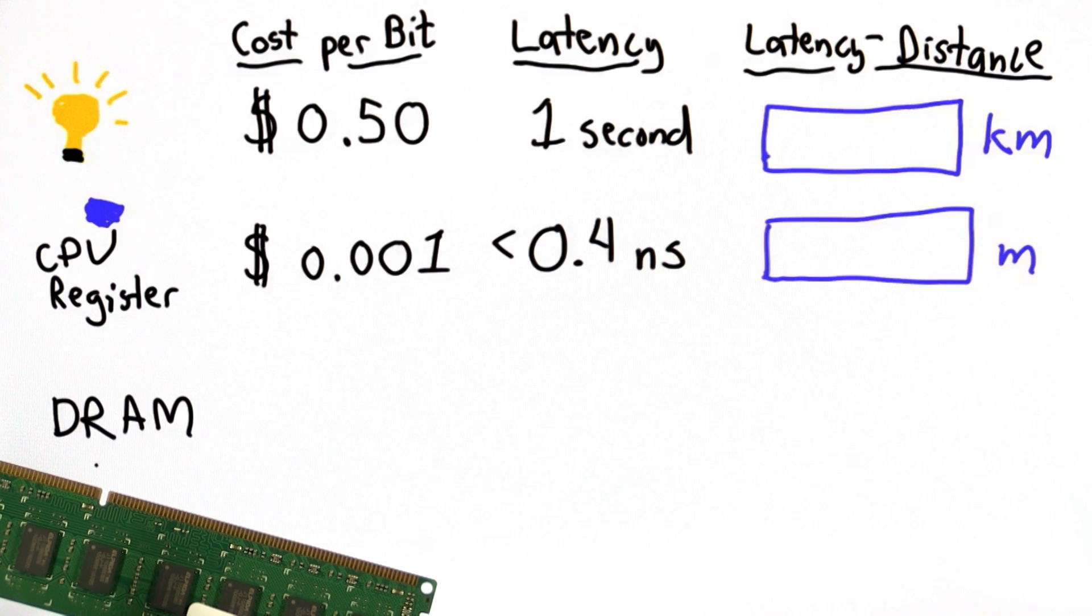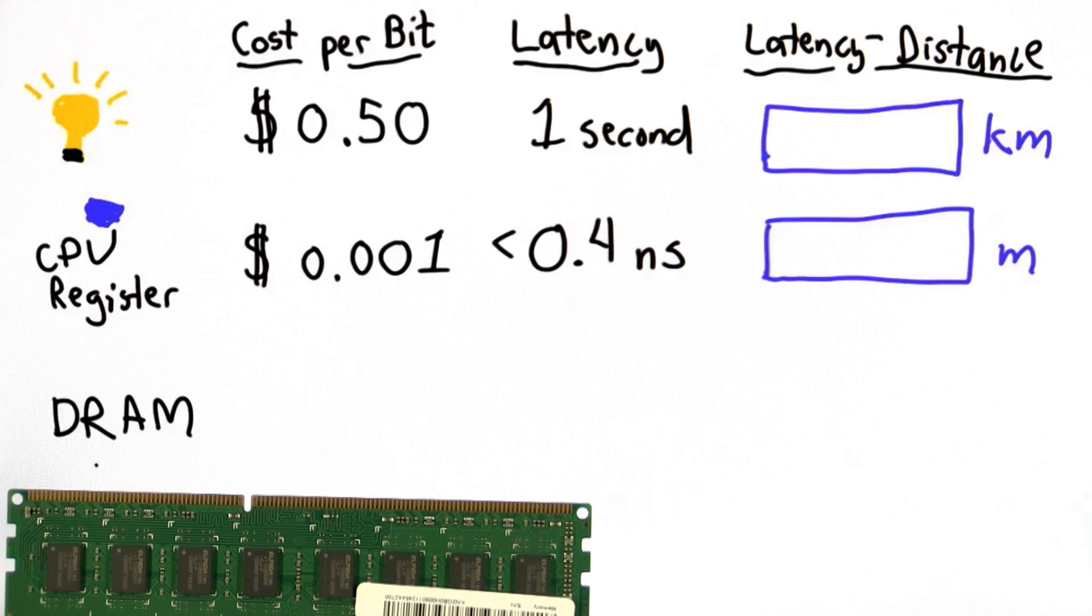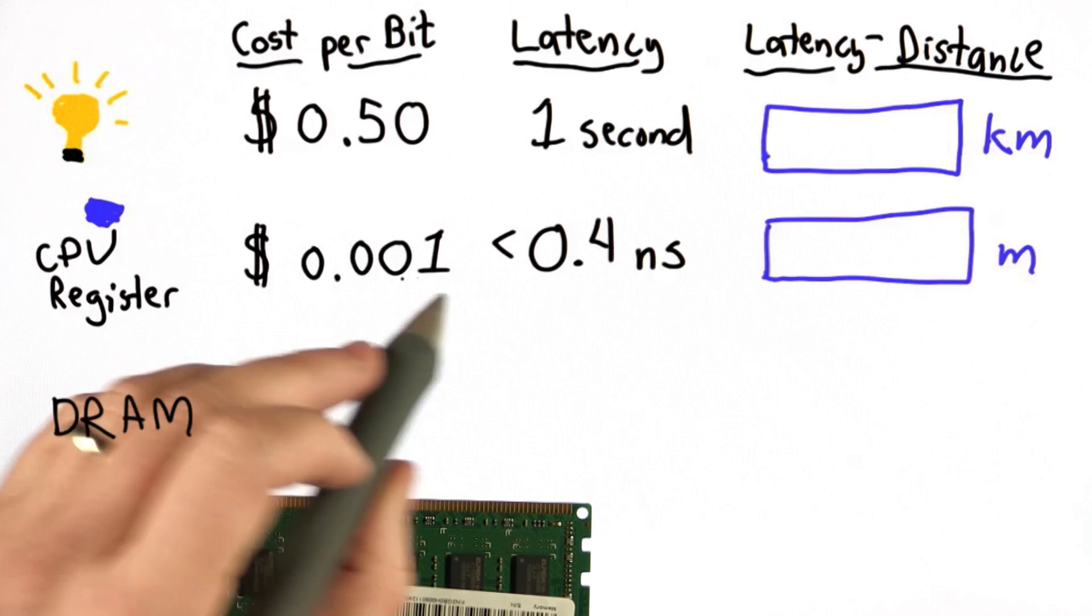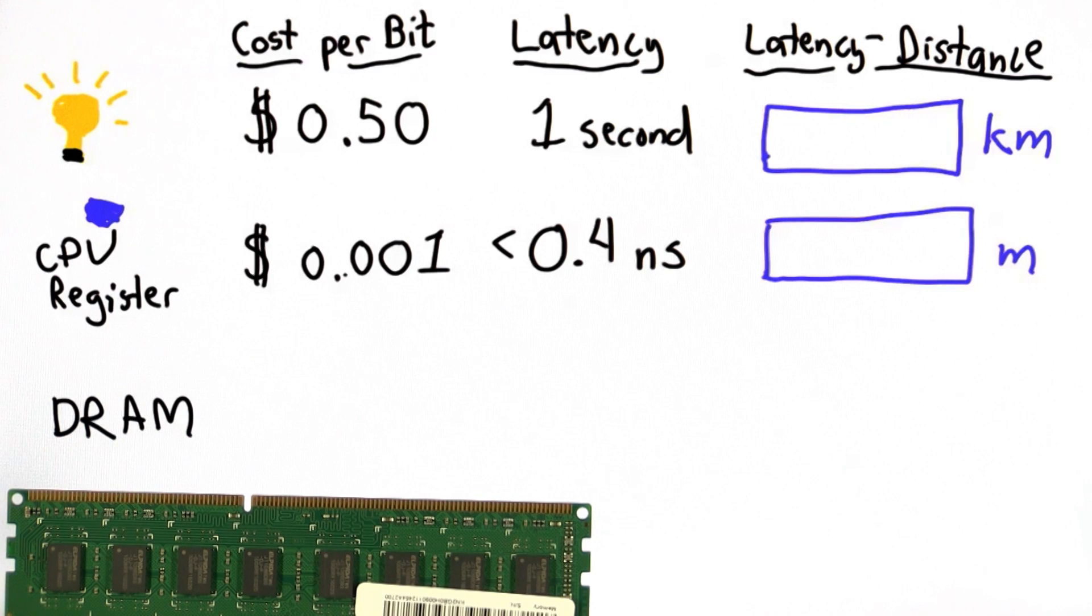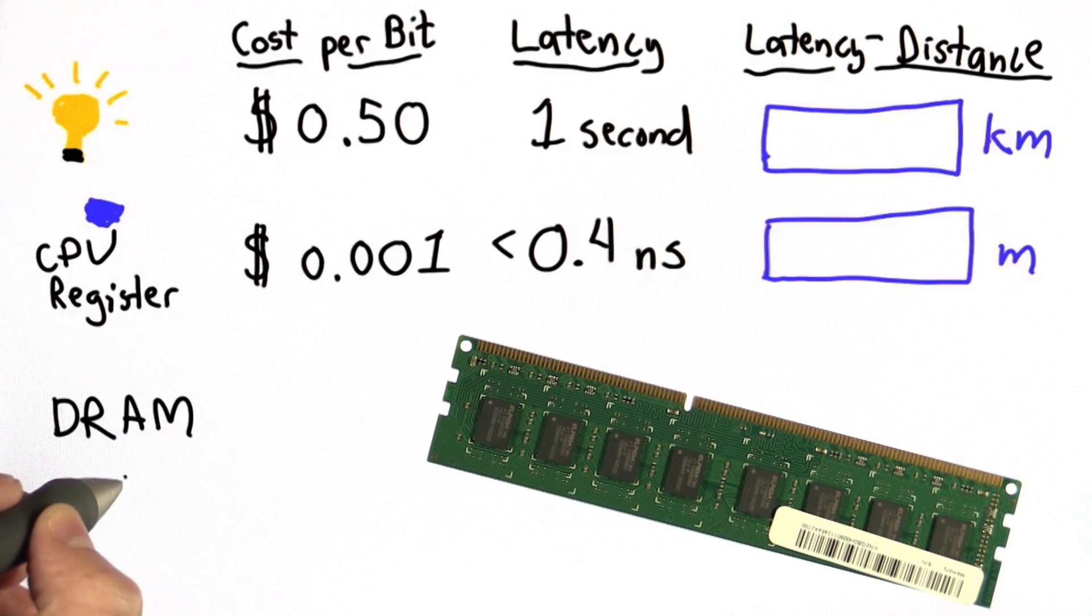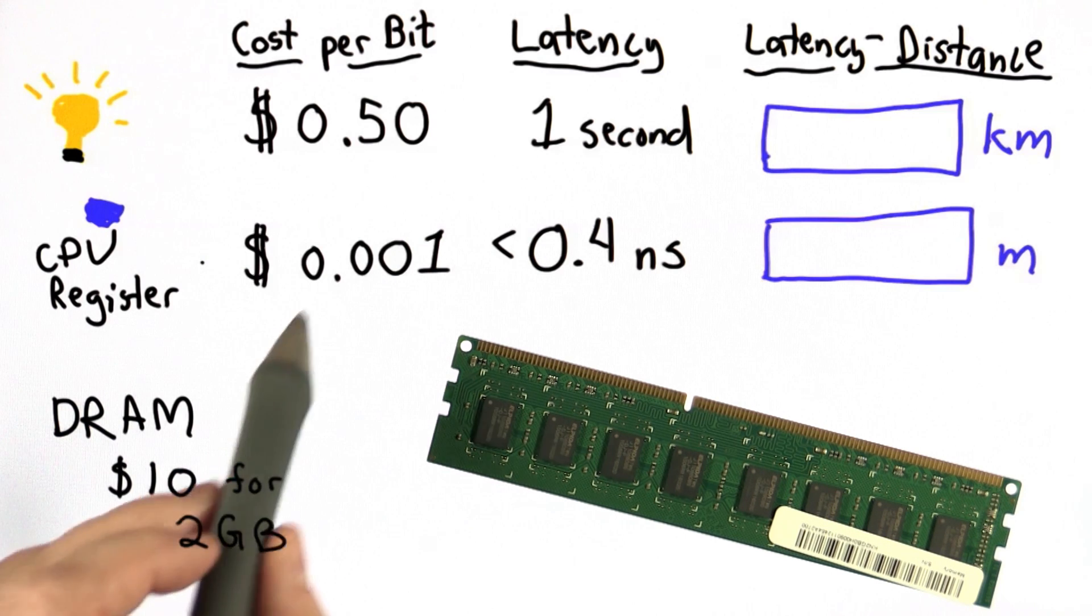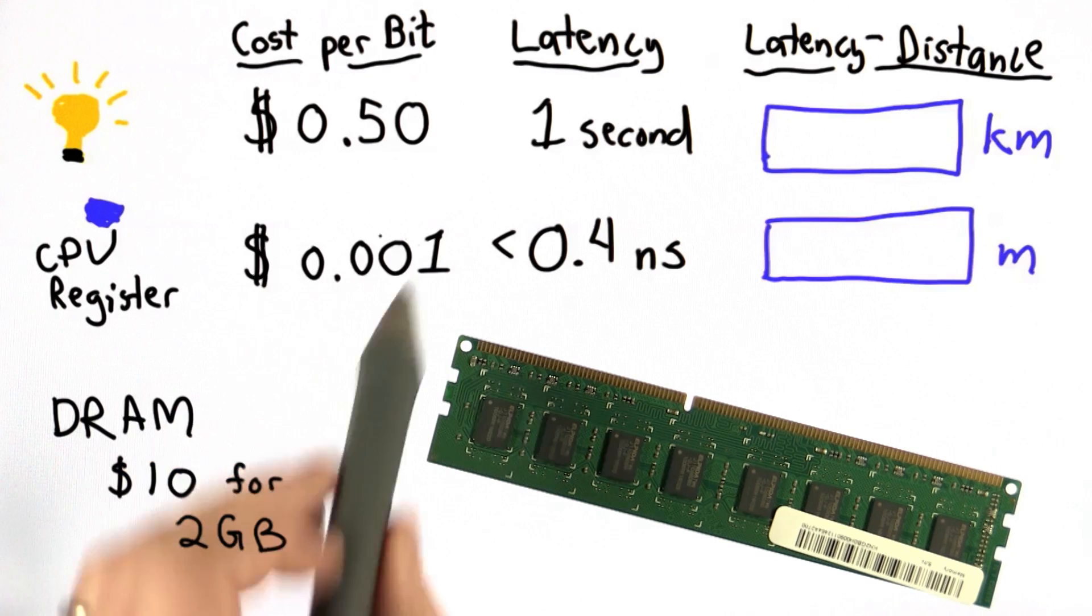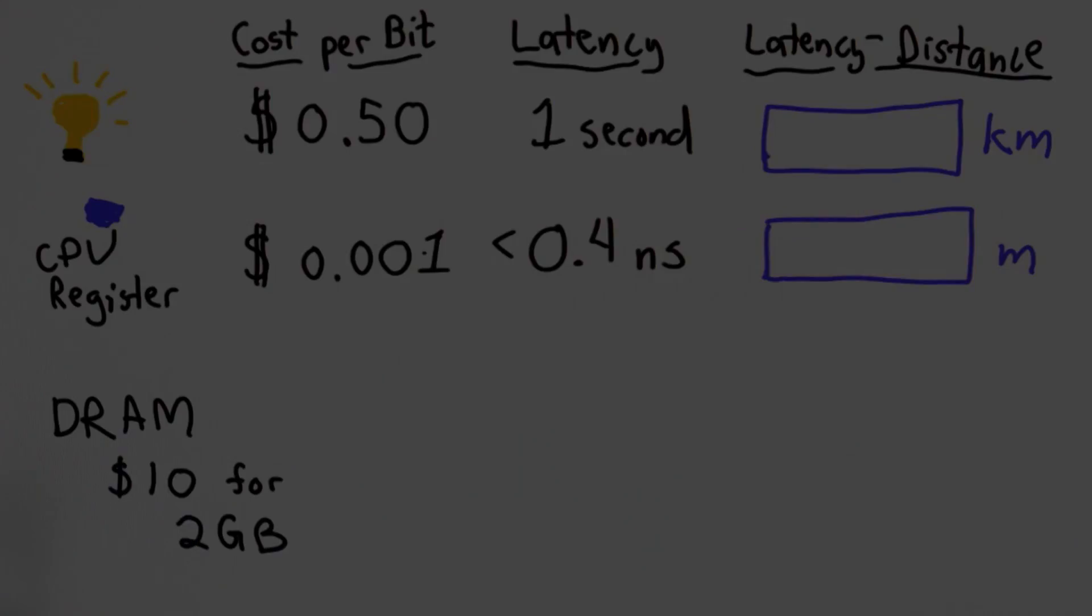So the third type of memory we've talked about so far is the DRAM. The cost per bit for the DRAM, well, our DRAM costs about $10 and it stores 2 gigabytes. So in order to write down the cost per bit, we really need a new unit. If we try to write it in terms of dollars and cents, it's going to be far too hard to see. We're going to need far too many zeros before we get to the value using regular dollars and cents. So we're going to use a new kind of currency.